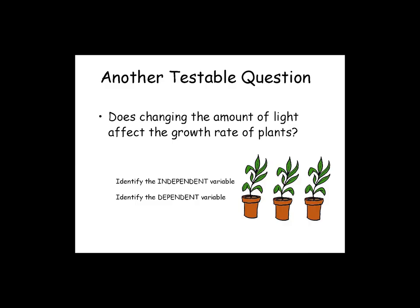Another testable question: Does changing the amount of light affect the growth rate of plants? Identify the independent variable and the dependent variable. Remember, the independent variable is the thing that you change. The dependent variable is what happens because you changed something.